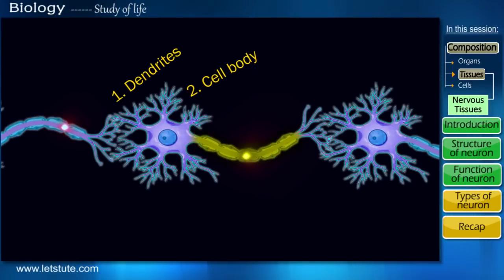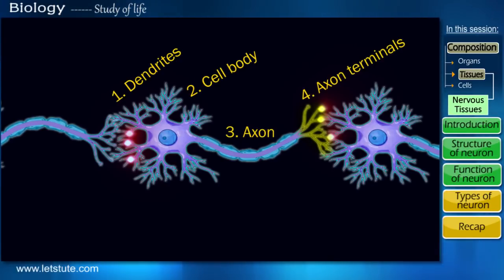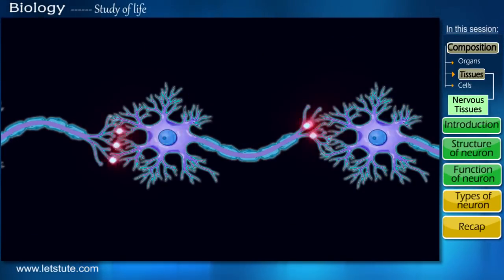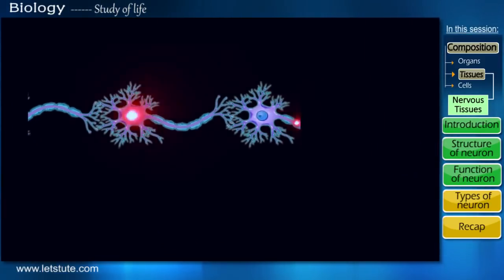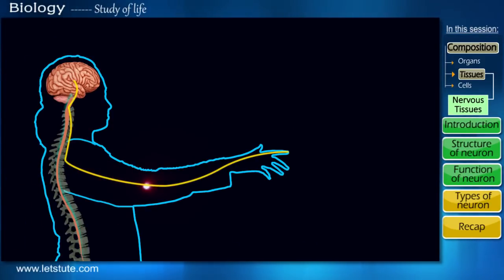Then it travels along the axon and lastly the axon terminals pass on the signal to the dendrites of the second neuron. This transmission goes on till the signal has reached its destination.